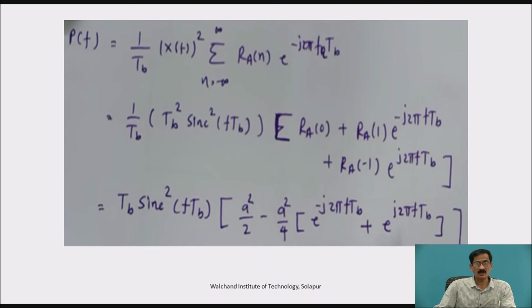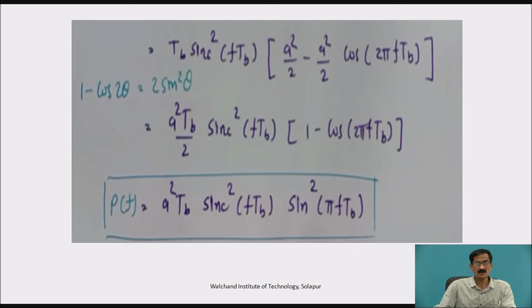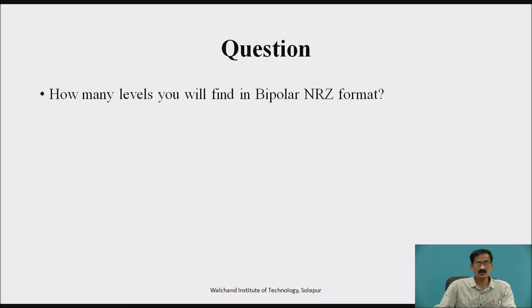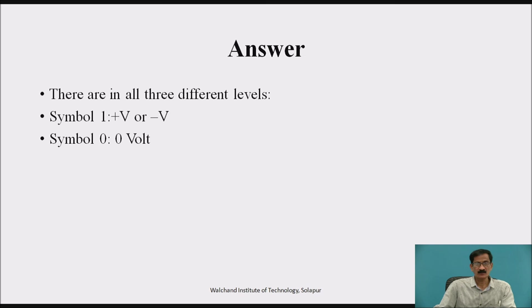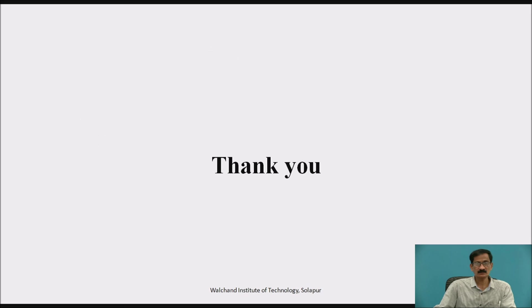Taking A²/2 outside and replacing 1 − cos(2πFT_b) with 2sin²(πFT_b), the final Power Spectrum Density is: P(F) = A²T_b · sinc²(FT_b) · sin²(πFT_b). Review question: how many levels are in bipolar NRZ? Answer: there are 3 levels — symbol 0 is represented by 0 volts, and symbol 1 is represented by plus V or minus V, with consecutive ones alternating polarity. References. Thank you.